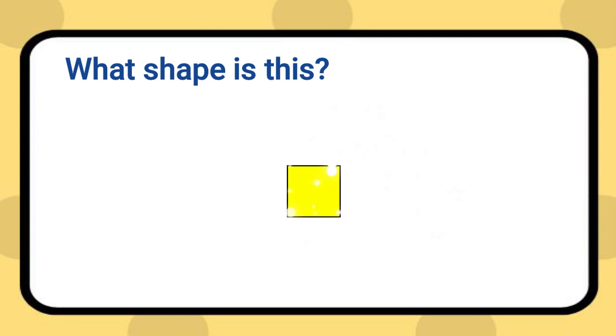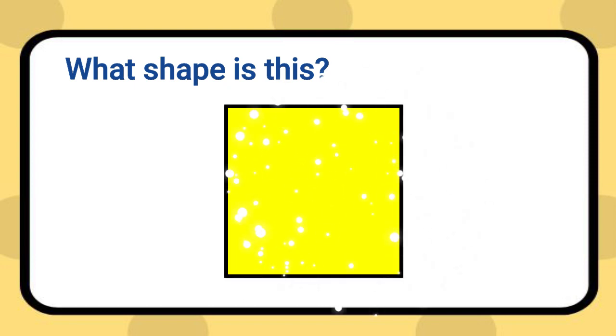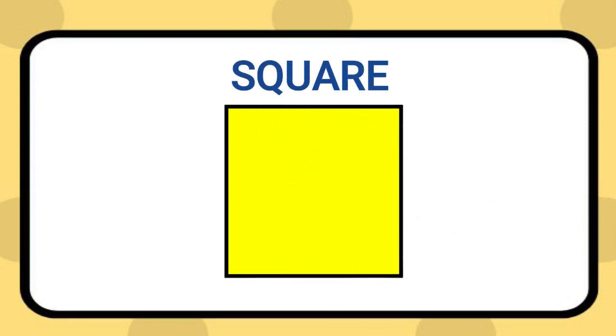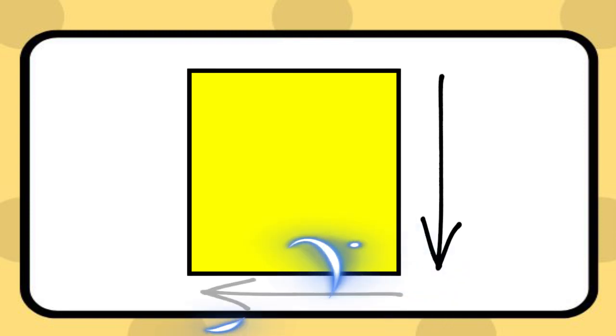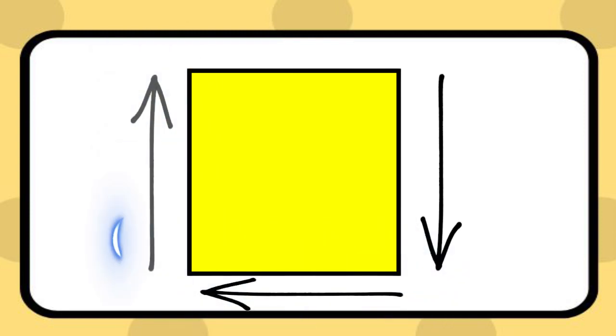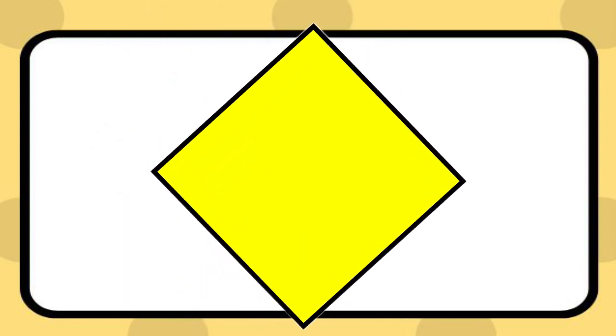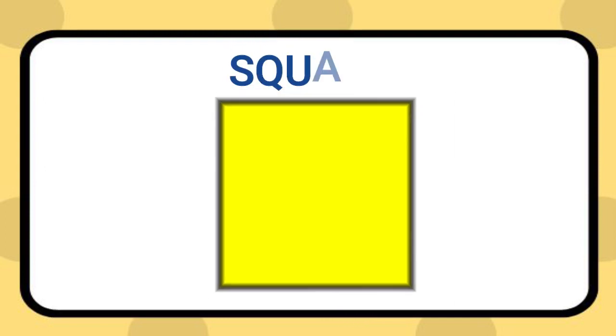What shape is this? This is a square. A square has four sides: one, two, three, and four. All sides are equal. Square.